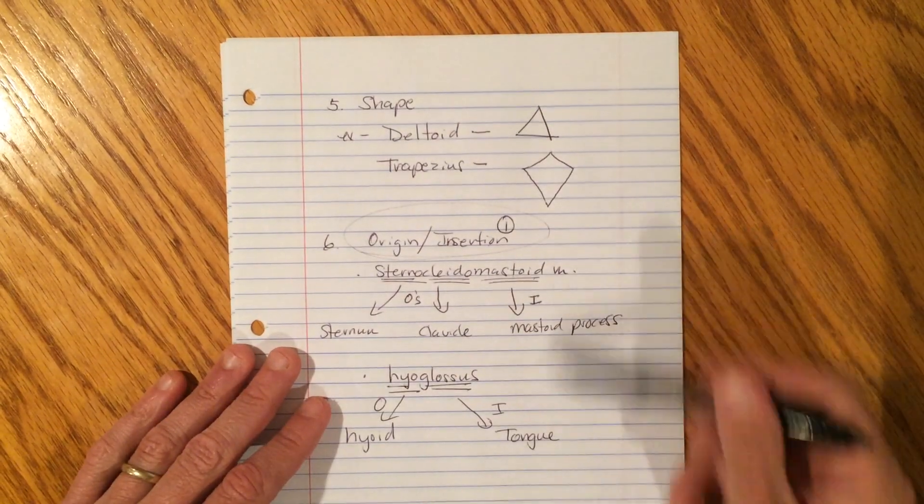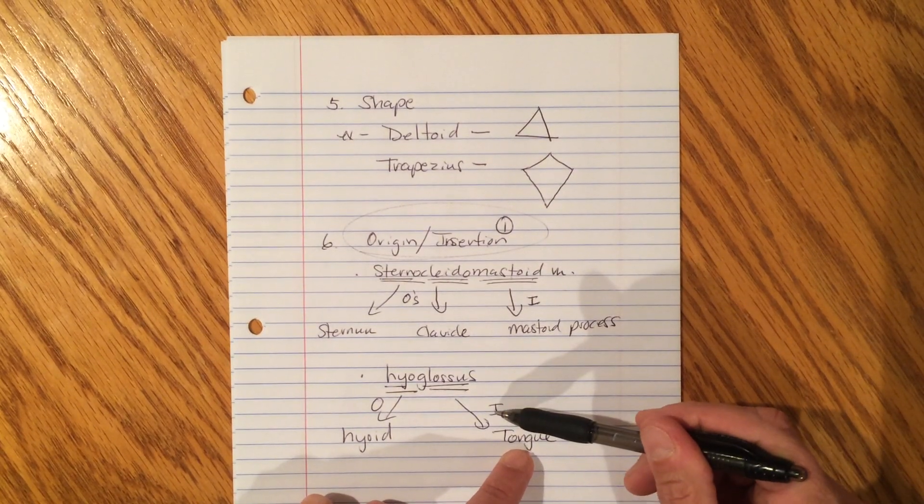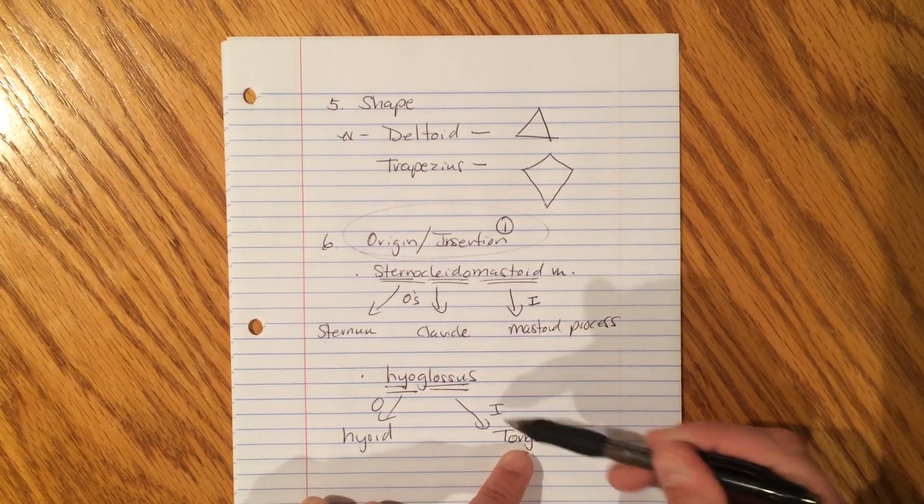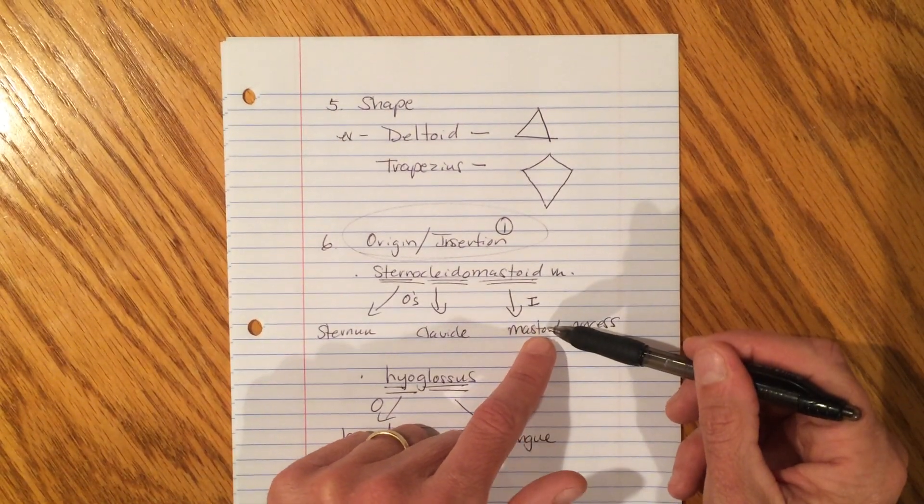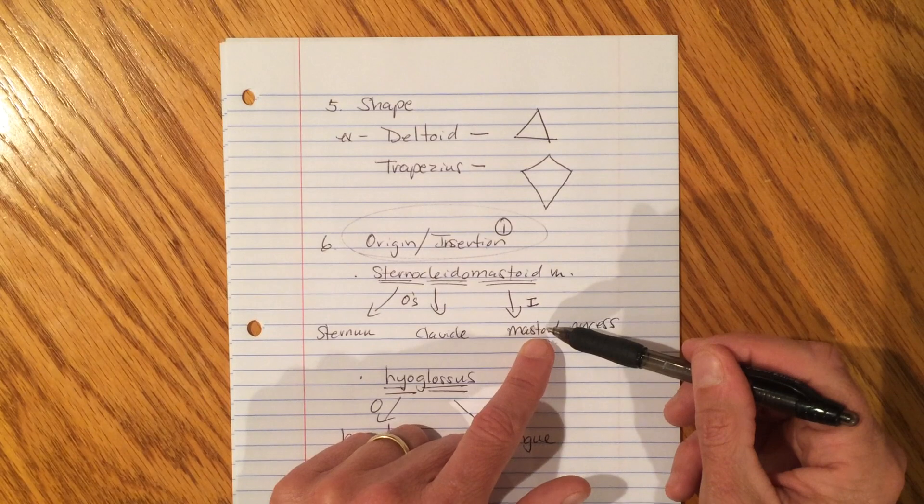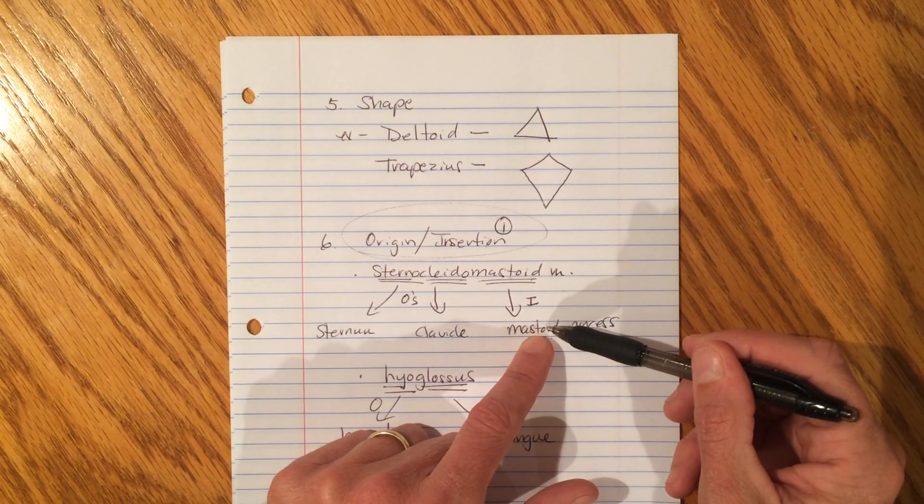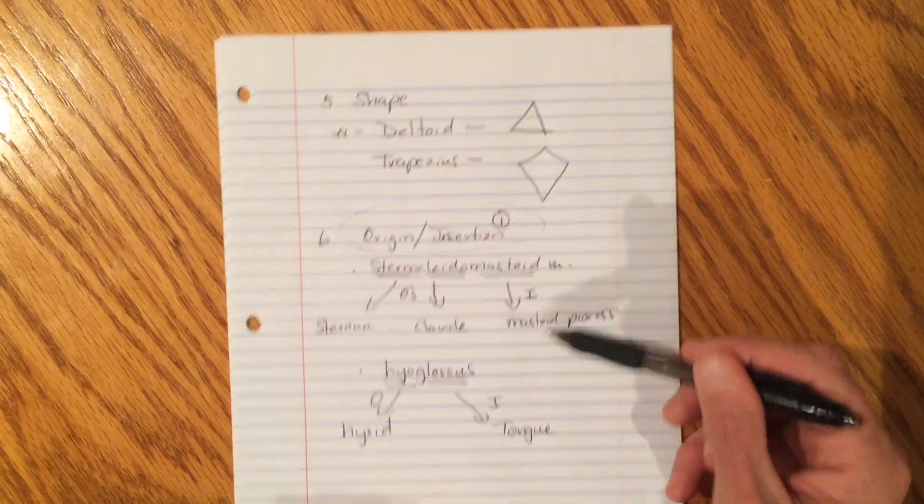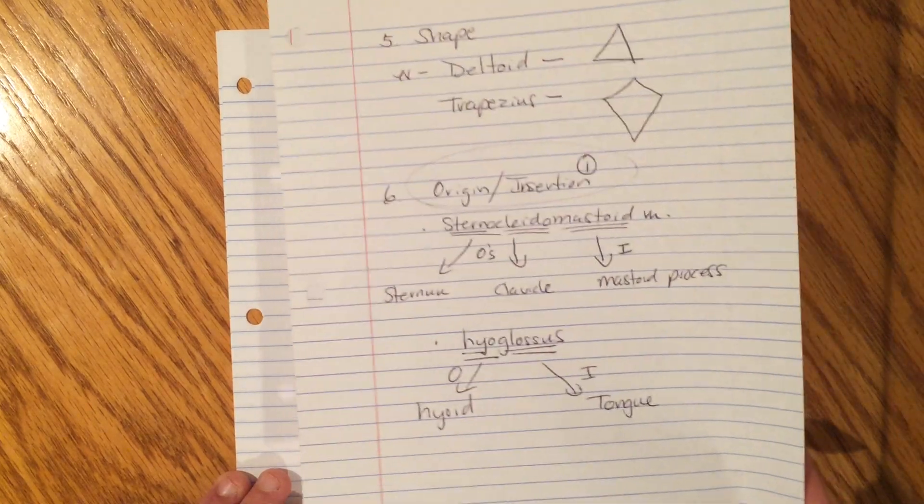Now, here's the other cool thing. So, what's moving? If the insertion point is the end that moves, what's moving? The tongue. The tongue is going to move. So, here, what's going to move? The mastoid process. Well, the mastoid process is just a lump off of the temporal bone. So, what's going to move? Your whole head. And this is going to be really critically important when we start learning how muscles move the body around.